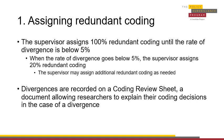For example, if there are 50 jurisdictions being studied in a cross-sectional project, with batches of 10 jurisdictions at a time being assigned, the first 10 jurisdictions should all have redundant coding. If the rate of divergence for that batch is below 5%, then only two of the following 10 jurisdictions should have redundant coding.